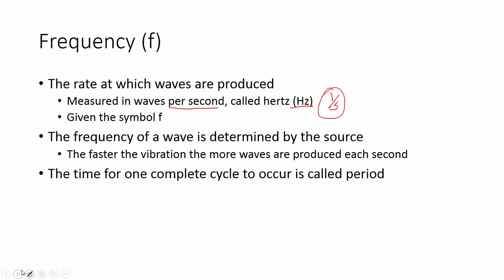There is something called period which is the inverse of frequency. Instead of saying how many waves happen per second, it's basically how many seconds per wave. For one complete cycle, that's one complete wave to go by. That's called period. It is measured in seconds and it's given the symbol T.